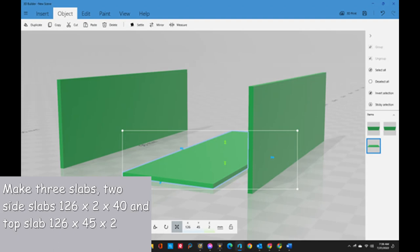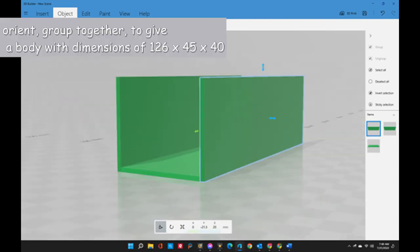Start out by creating three slabs using the make a cube command. Then orient them and group them as shown to make the main building body with the dimensions that are shown here.